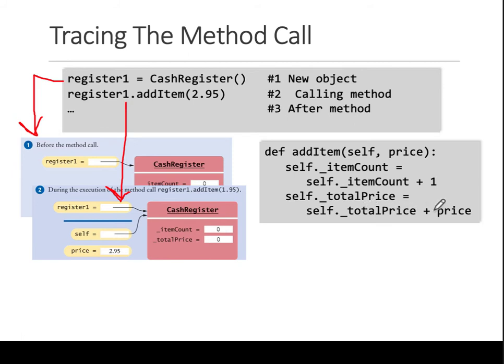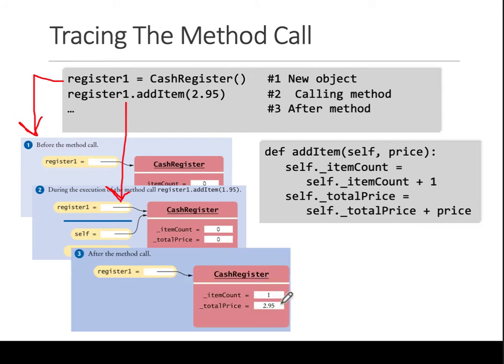Now this line is here, so what's happening? addItem 2.95 increases the count by one and increases the total price by whatever price is given here. Initially they are zero. The item count is now one, price is now 2.95. If you call addItem again, count becomes two, total price becomes 2.95 plus 2.95, which is 5.90.